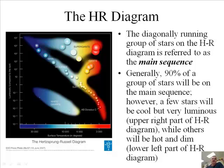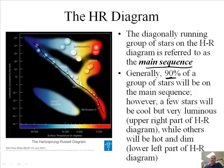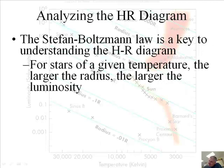It's interesting that stars follow this very specific pattern called the Hertzsprung-Russell diagram. The diagonal group of stars along that main line are called main sequence stars — you should write that down. About 90% of all the stars you find when you look at the sky fit along the main sequence. There are a few exceptions — our branches: the giants, the supergiants, and the white dwarfs, which we'll talk about in a little bit. A few stars will be cool but very luminous, in the upper right-hand part of the diagram, while others will be hot and dim down in the lower left, though that's not very common.